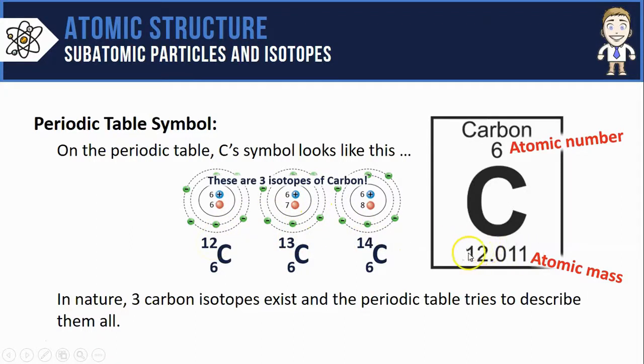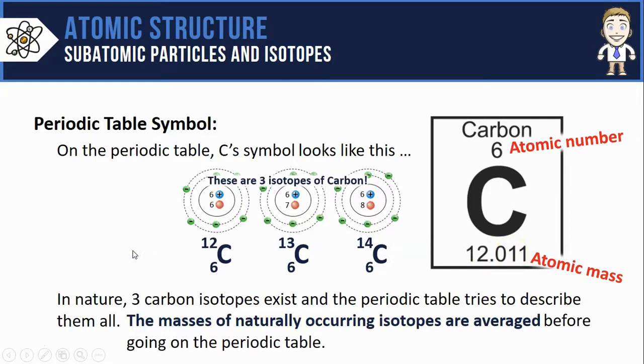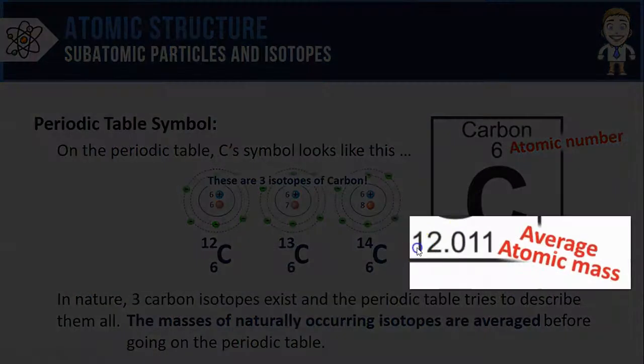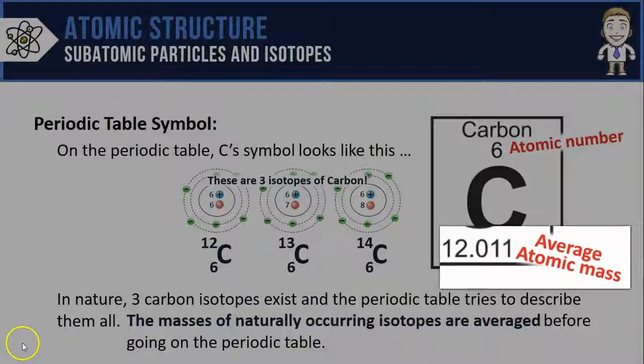So it's kind of like saying which of those masses should we put on the periodic table. And what the periodic table does is it averages out all of the possible masses for these naturally occurring isotopes, and that's what gets reported. That decimal is simply trying to represent all of the different isotopes that carbon atoms can have, averaging them together to get 12.011.